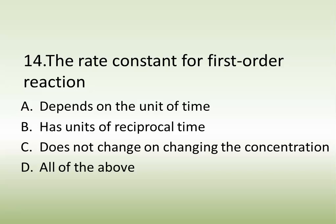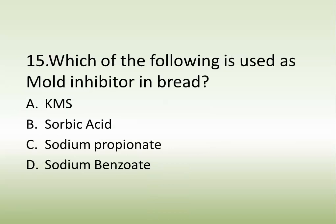Question number fourteen: the rate constant for a first order reaction. Options are: depends on the unit of time, has units of reciprocal time, doesn't change on changing the concentration, or all of the above. The correct answer is all of the above. Question number fifteen: which of the following is used as a mold inhibitor in bread? Options are: KMS (potassium metabisulfite), sorbic acid, sodium propionate, or sodium benzoate. The correct answer is sodium propionate.